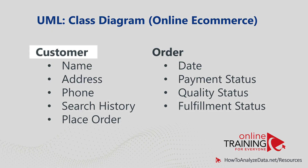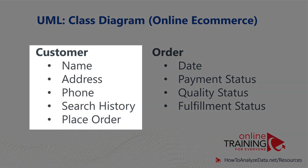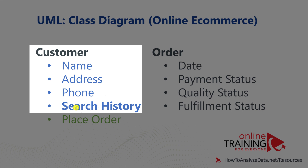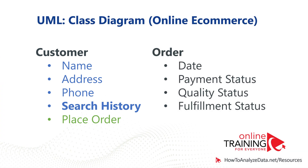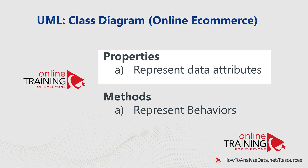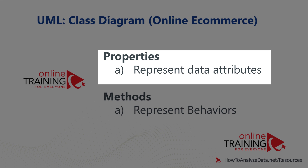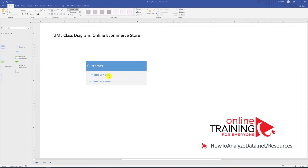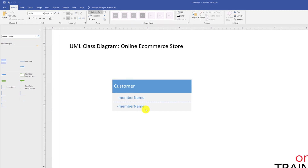There is a minimum of two classes we might need. The first one is Customer. Customer typically has name, address, and phone. We also would like to capture search history of the customer, as well as allow the customer to place an order. Customer always has a one-to-one relationship for name, address, and phone. Search history done by the customer on an online e-commerce website typically represents multiple items. The first four items are attributes of the class, indicated in blue, versus placing an order, which is an action — a method. Each class can contain properties, which represent data attributes, as well as methods, which represent behaviors. Both properties and methods are members of the class. You use the above-the-line area to show properties, and the below-the-line area to show methods.